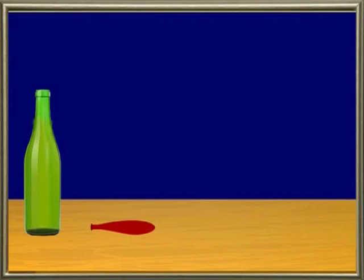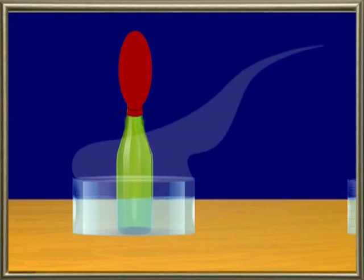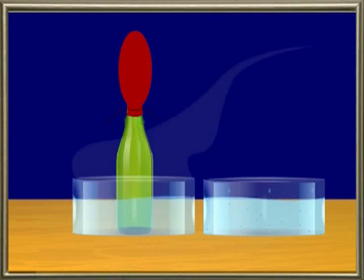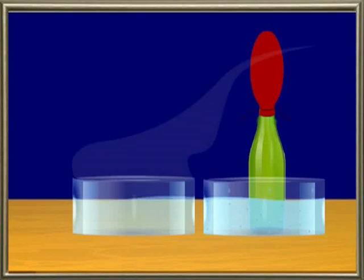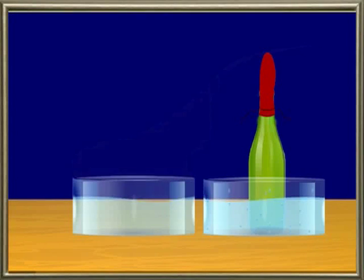Let's do an activity to understand this concept. Take an empty thick glass bottle and a fine rubber balloon. Stretch its mouth and invert it over the neck of the bottle. Tie it tightly to prevent outside air from entering. Place the bottle in a hot water bath and observe: the balloon bulges out gradually. Then remove the bottle and place it in a trough of ice-cold water. The balloon becomes flat again, showing that on heating, air expands and enters the balloon, causing it to bulge out.